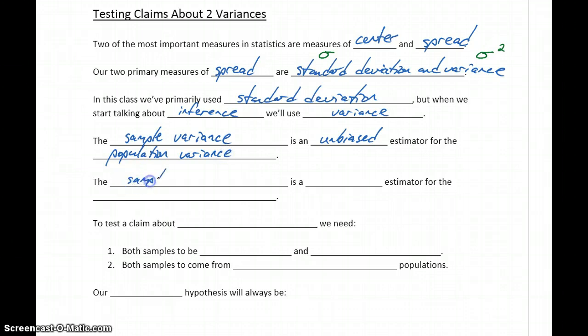Sample standard deviation, on the other hand, is a biased estimator for population standard deviation. The basic idea is our sample variance does a better job of estimating or allowing us to test claims about the population variance than our sample standard deviation does about population standard deviation.